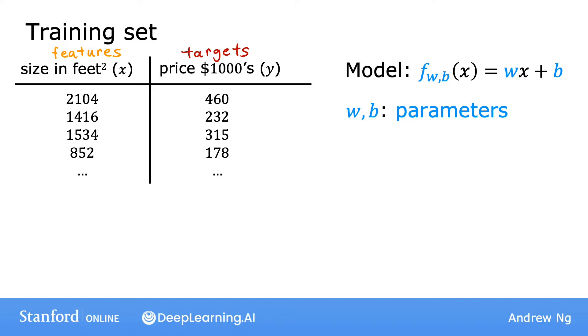In machine learning, parameters of a model are the variables you can adjust during training in order to improve the model. Sometimes you also hear the parameters w and b referred to as coefficients or as weights. Now, let's take a look at what these parameters w and b do.